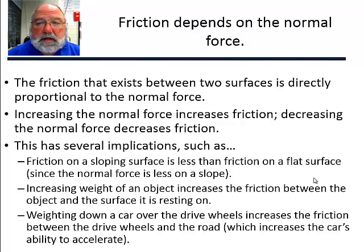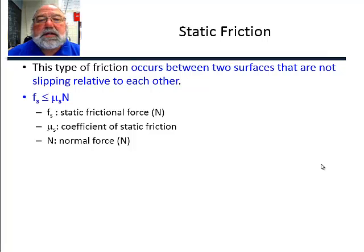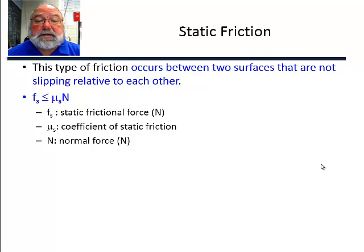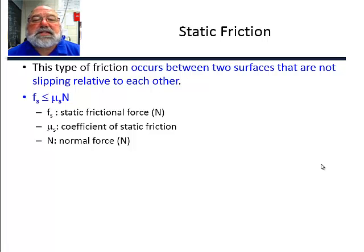The type of friction that helps us walk, helps us drive, and keeps things stuck on inclined surfaces so that they don't slide down, is called static friction. It occurs between two surfaces that are not slipping relative to each other. The static friction force — we use the subscript s — is less than or equal to mu sub s, the coefficient of static friction, times the normal force.